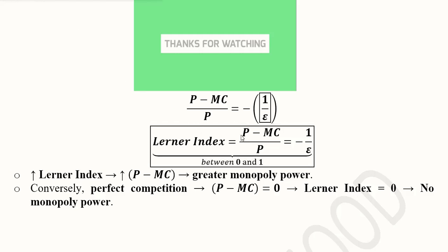The Lerner Index will increase if the difference of price and marginal cost increases because this difference exists in the numerator. As the difference increases the monopoly power will become greater. Conversely, for perfect competition where market power is at minimum, the difference of price and marginal cost will be at minimum, perhaps equal to zero, so the Lerner Index will be equal to zero and there will be no monopoly power.